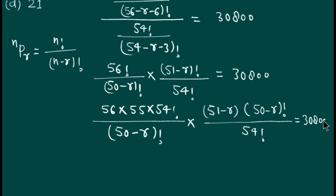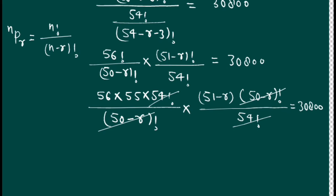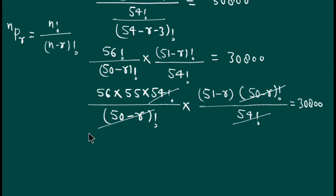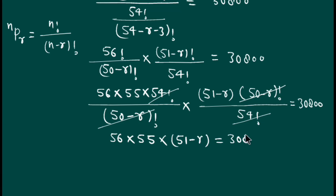Now you can easily see that (50 minus r) factorial cancels out, and 54 factorial cancels out. So we are left with 56 times 55 times (51 minus r) equals 30800.